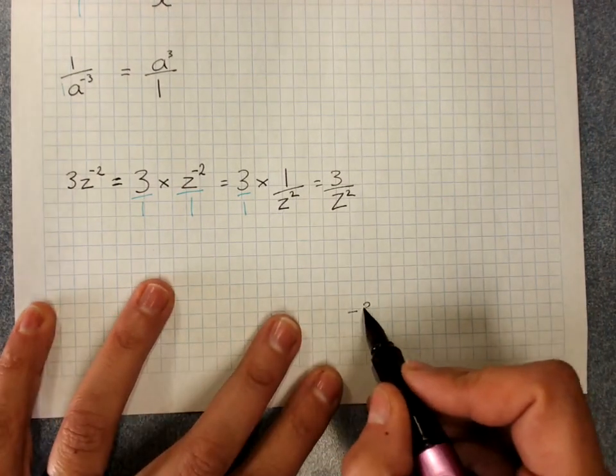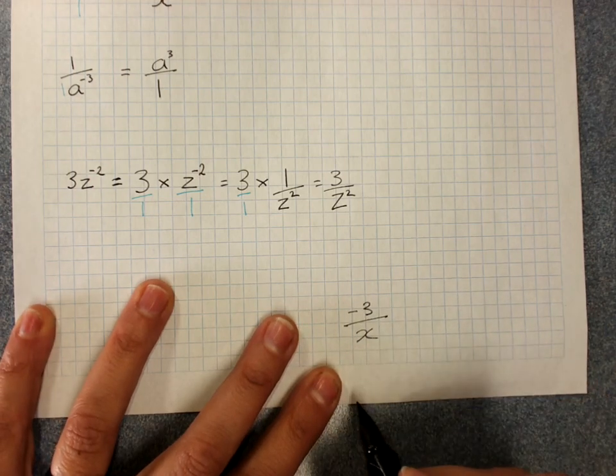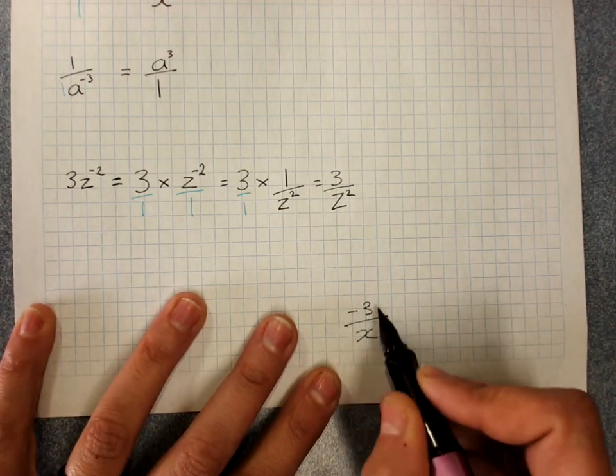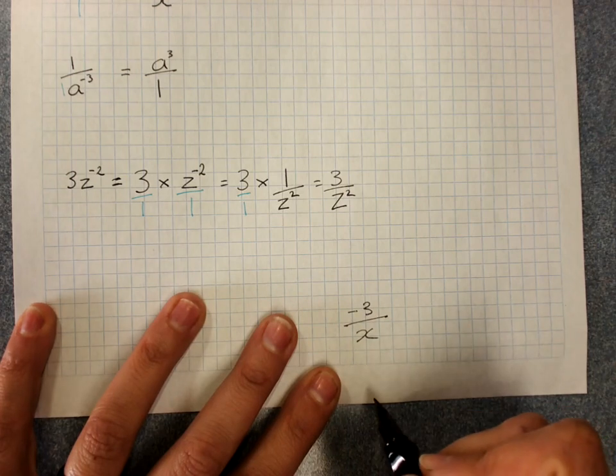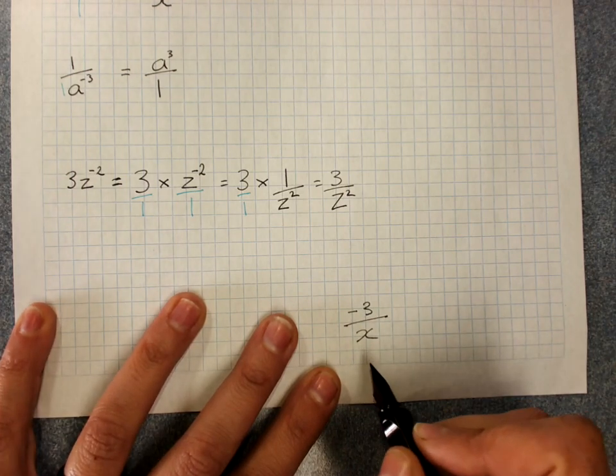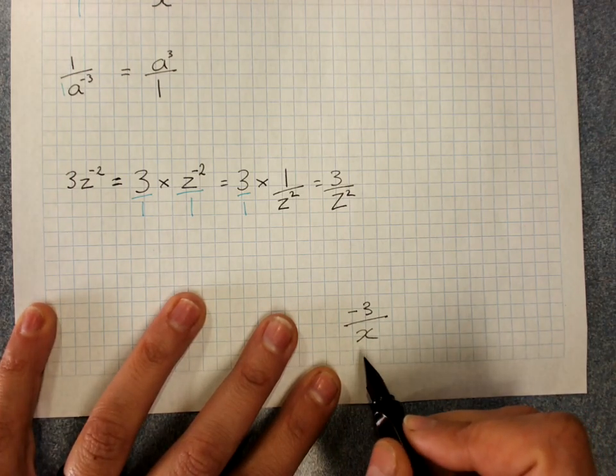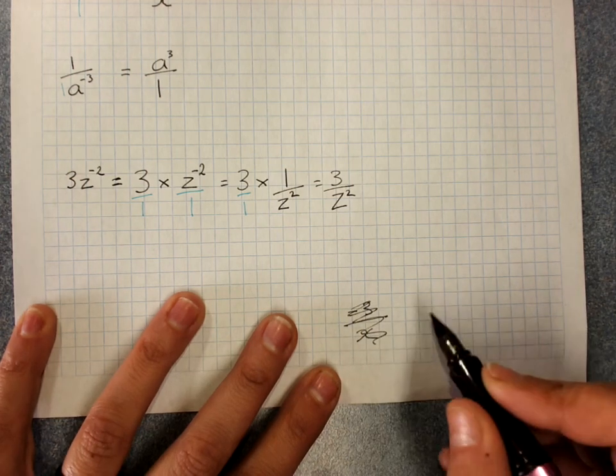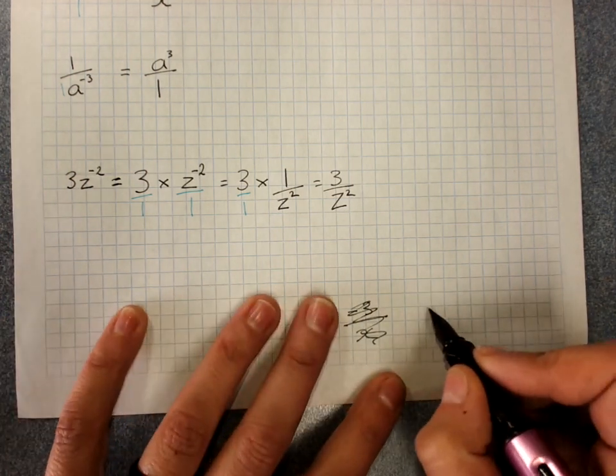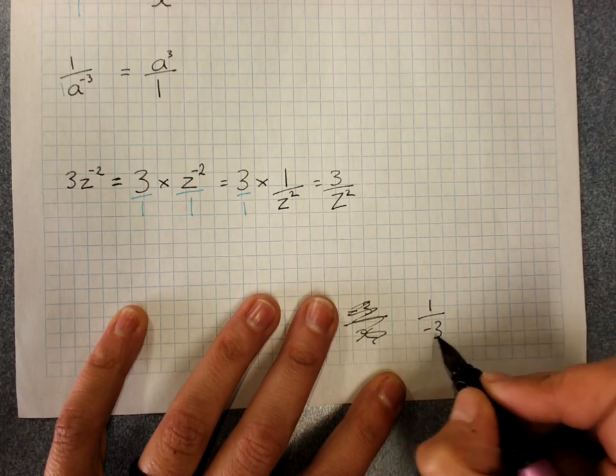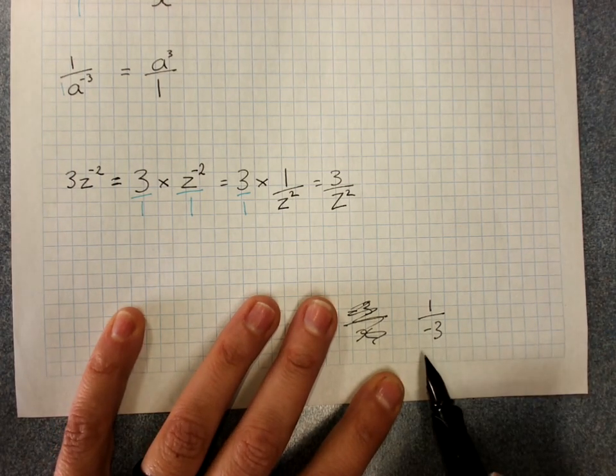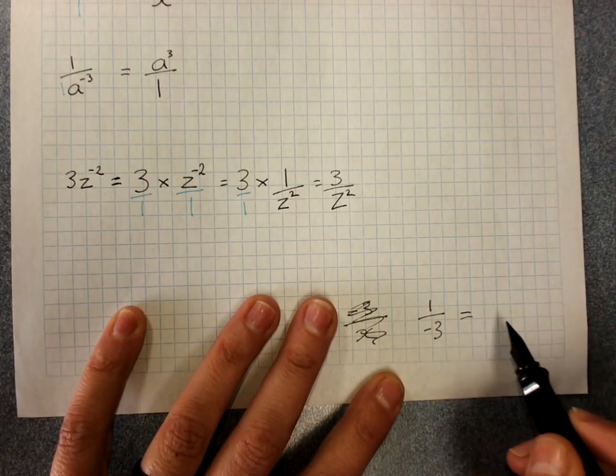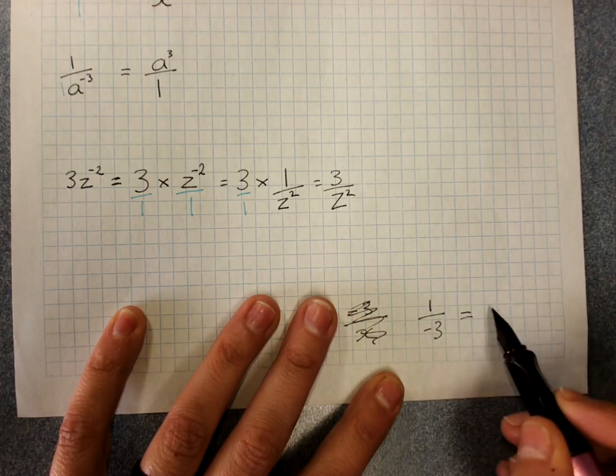Negative 3 over x—I can't move that negative 3. It's not a negative index. If I took another example, 1 over negative 3, I can't say that's the same as the positive reciprocal.